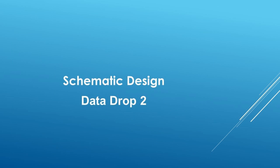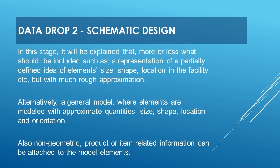Let's look at Data Drop 2 — the schematic design stage. In this stage, more or less what should be included includes: a representation of a partially defined idea of elements' size, shape, and location in the facility, but with much rough approximation. Alternatively, a general model where elements are modeled with approximate quantities, size, shape, location, and orientation. Also, non-geometric product or item related information can be attached to the model elements.